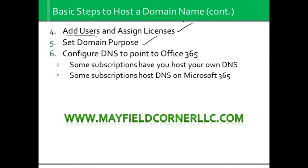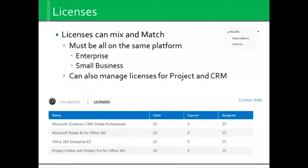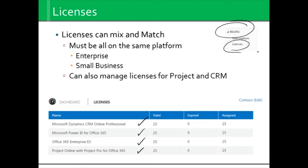You want to set a domain purpose — usually you'll see just email — and we've got DNS pointing to Office 365. Licenses can be mixed and matched. Right here in the licensing console, you might see CRM Professional, Power BI, Office 365 Enterprise E3 — where E3 is the level of license — and then Project Online with Project Pro for Office 365. You'll see I've got 25 valid of each, none of them have expired, and we've actually assigned all 25. So if I'm now to bring on a 26th user, I know I need to go through the administrative console, through billing and licenses, and add them.